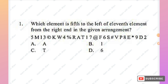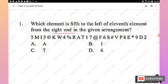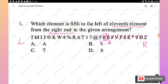Question 1: Which element is fifth to the left of the 11th element from the right end in the given arrangement? For this type of question we read from the right end. Counting from the right: the 11th element is identified, then we count five positions to the left — that gives us position 1, 2, 3, 4, 5. The answer is option C: T.